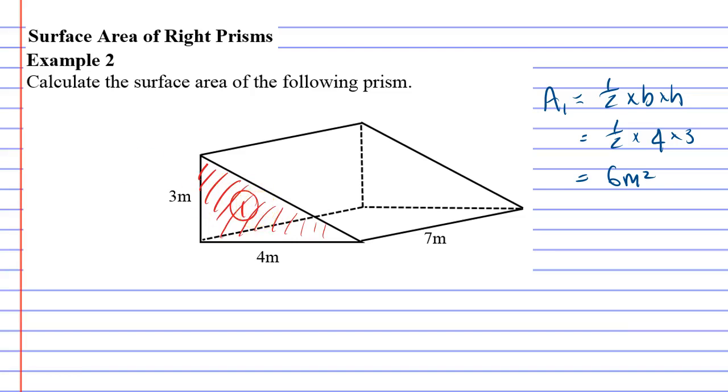So that's the area of the triangle at the front, and I want to point out that there's another shape like this. The triangle at the back is the exact same triangle as the one at the front. So we'll say area 2 also equals 6 metres squared.